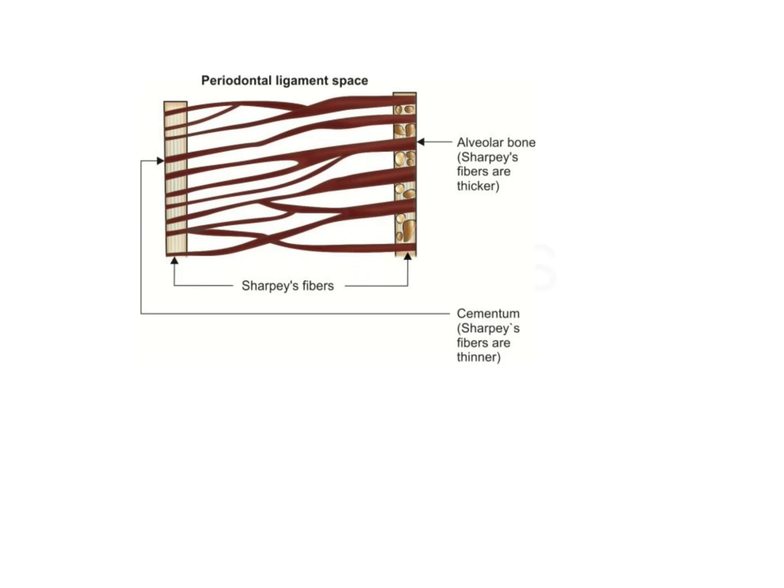One important thing to remember is that Sharpey's fibers are thicker on the side of the alveolar bone and thinner on the side of the cementum. This is because bone has the ability to turn over — there is continuous resorption as well as deposition of bone that occurs on a regular basis.